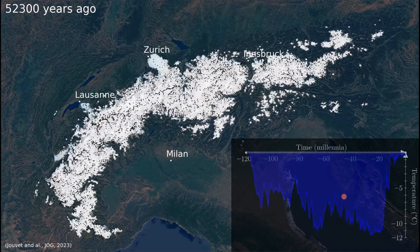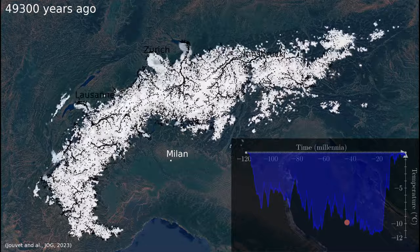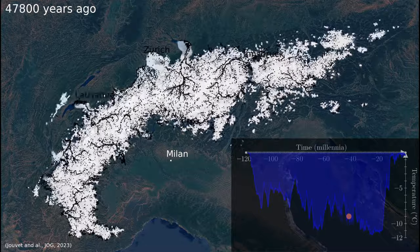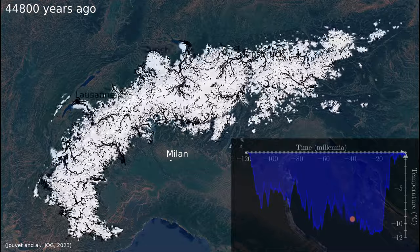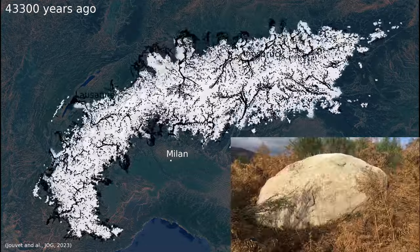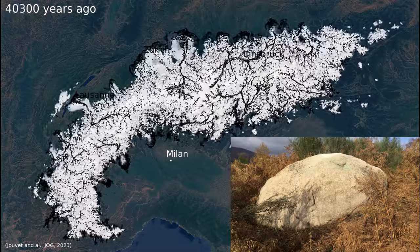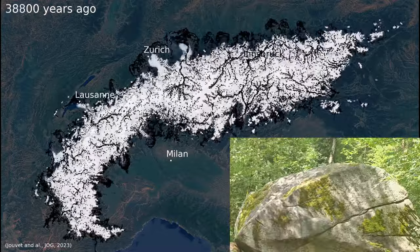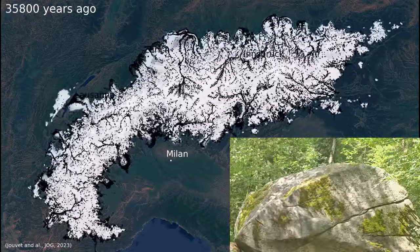The dynamics of glaciers has left a number of footprints on the landscape, which are still well visible today. For instance, glaciers moved huge erratic boulders over hundreds of kilometers.